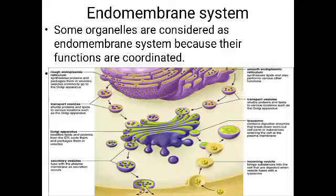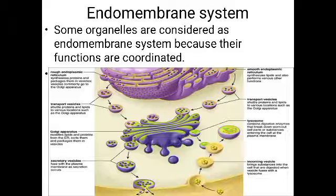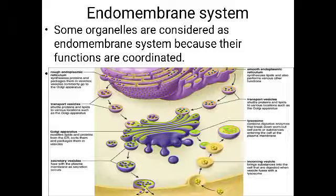In this class we can see about the endomembrane system. 'Endo' means inside membrane, so membranous structures inside the cytoplasm have coordinated functions and form the endomembrane system. Eukaryotic cells have membrane-bound organelles, and when their functions are coordinated, we consider them as the endomembrane system. The endoplasmic reticulum, Golgi complex, lysosomes, and vacuoles are considered part of the endomembrane system.